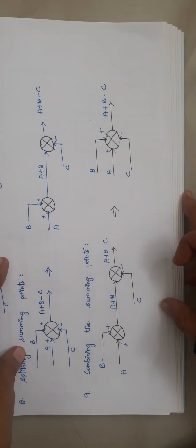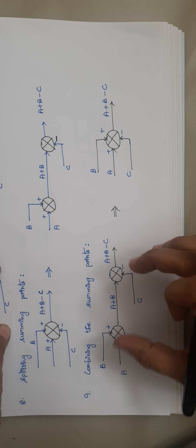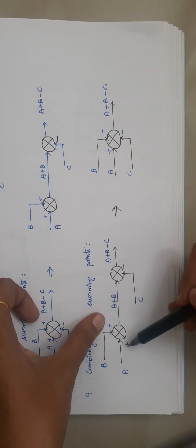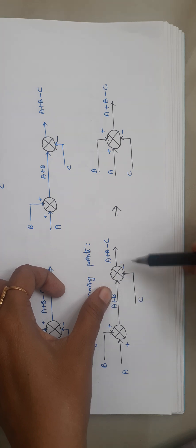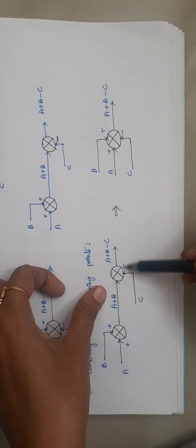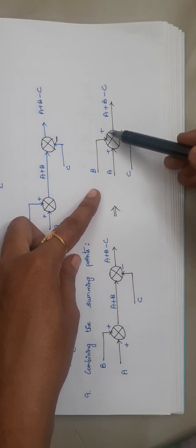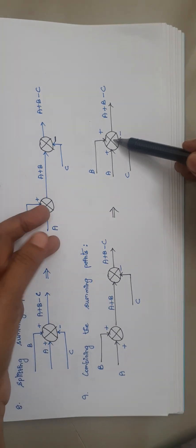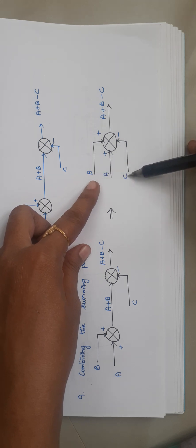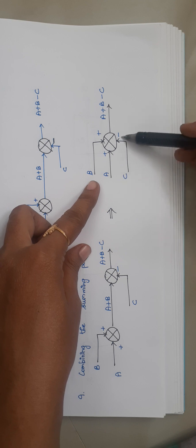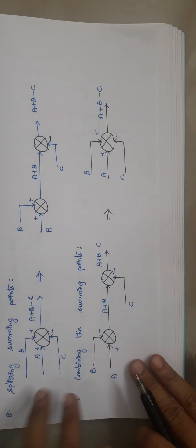The ninth rule is combining the summing points. Here two summing points are merged into a single one. The first summing point has inputs A and B (positive), giving A + B; the second takes A + B and C (negative), giving A + B − C. When combined into a single summing point with three inputs A, B (positive) and C (negative), the output is again A + B − C.